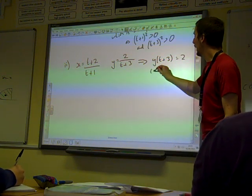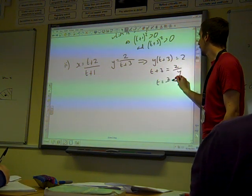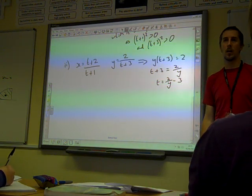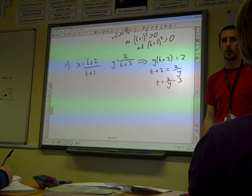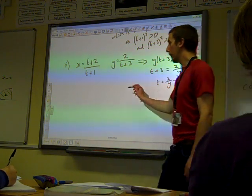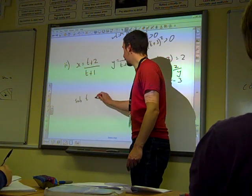So t plus 3 is 2 over y. So t equals 2 over y minus 3. And now that looks like it's a good start.